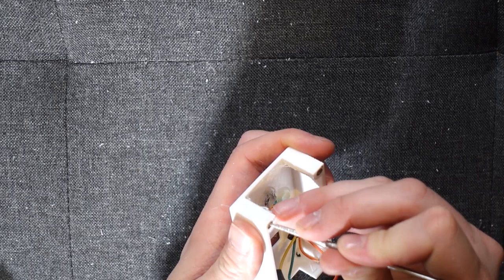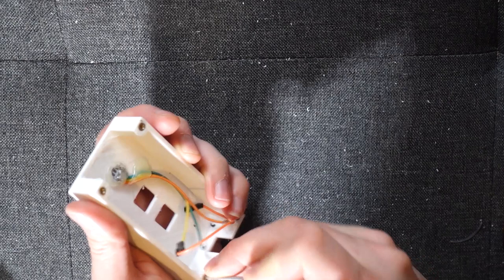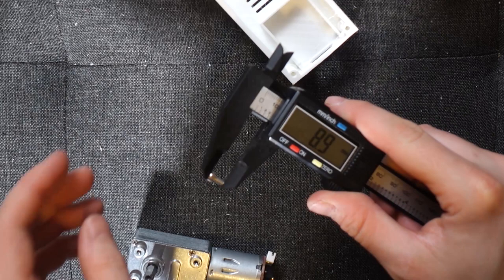Remove excess plastic from each of the holes using a file. Work out what length M3 bolts are required for each of the holes.